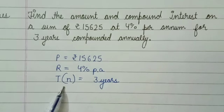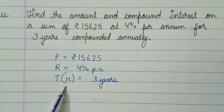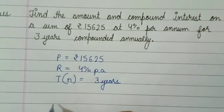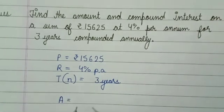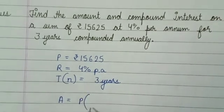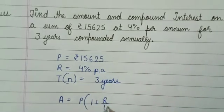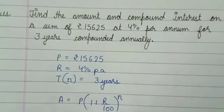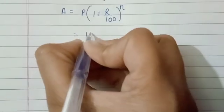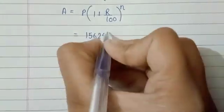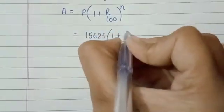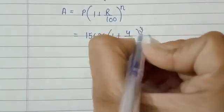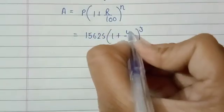We can directly apply the formula for amount, then we will find out CI or compound interest. So first, A equals P, means principal, into (1 + r/100) raised to the power n, means time. Now we put the values: 15625 into (1 + 4/100) to the power 3 years.